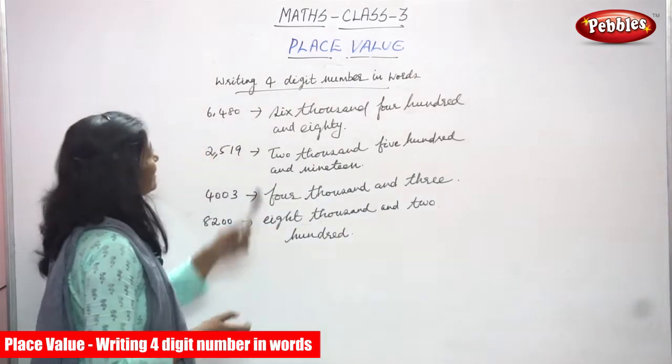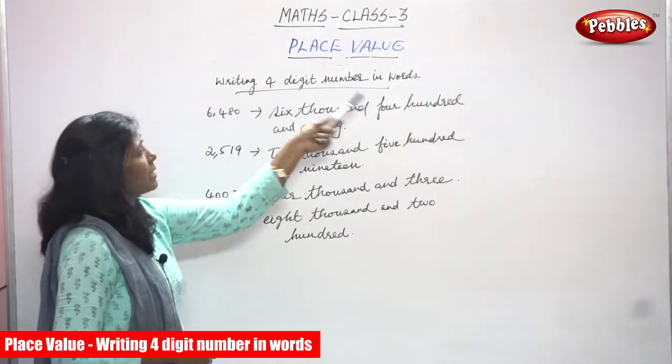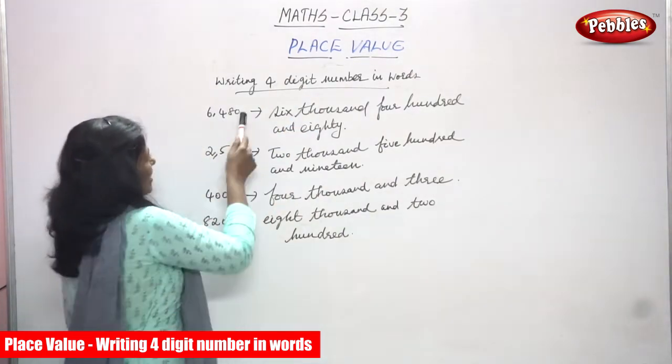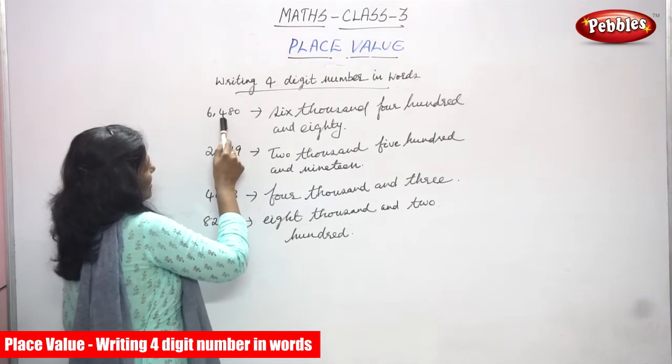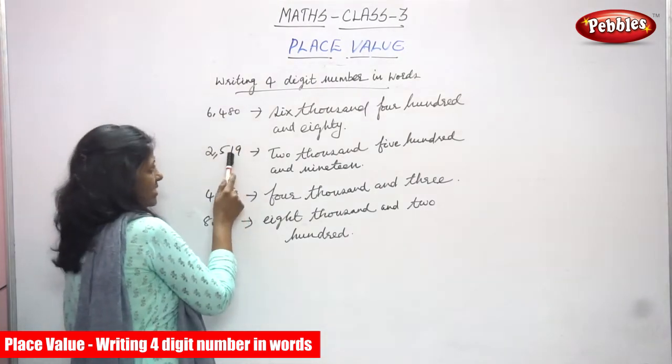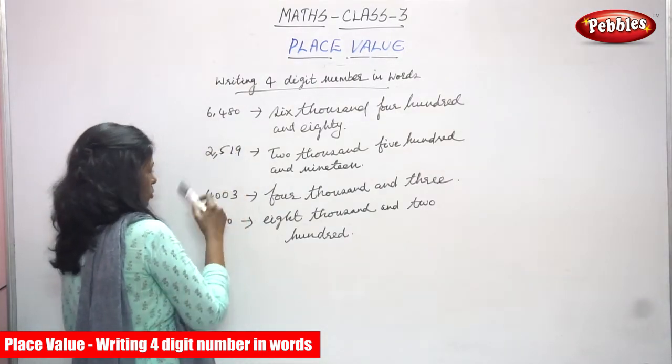Now we are going to see writing four-digit numbers in words. So this is ones, tens, hundreds, and thousands. This is also ones, tens, hundreds, and thousands.